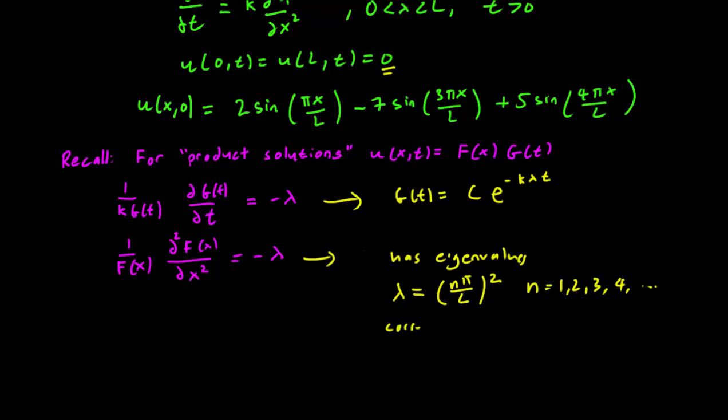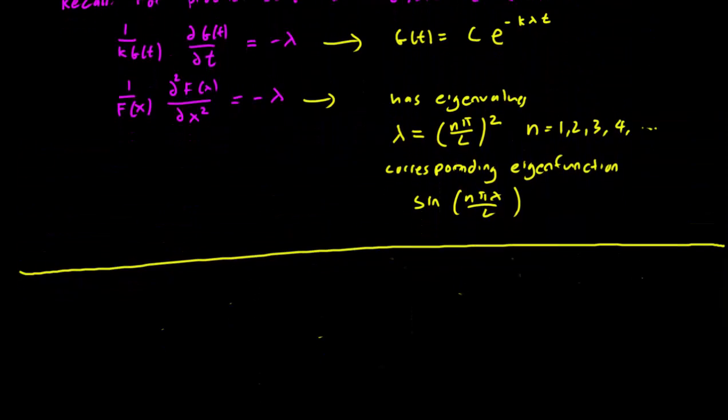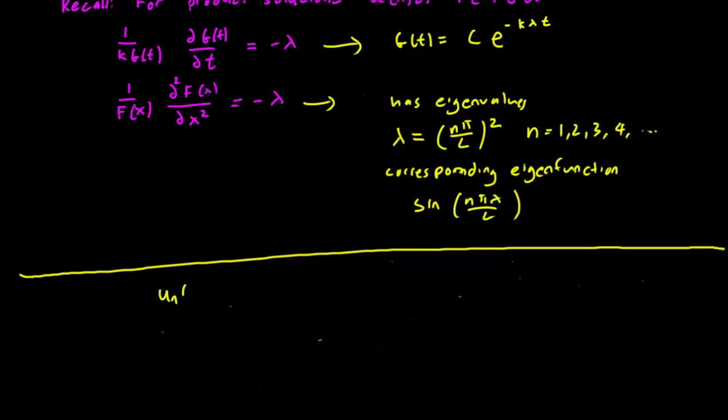And the corresponding eigensolution is going to be of the form sin(nπx/L). This implies that our product solutions must be of the form u_n(x,t) = e^(-k(nπ/L)²t) sin(nπx/L) for n = 1, 2, 3 and so on. And these product solutions may sometimes have a constant multiplied to it, but to keep things simple we just assume that the constant is 1.